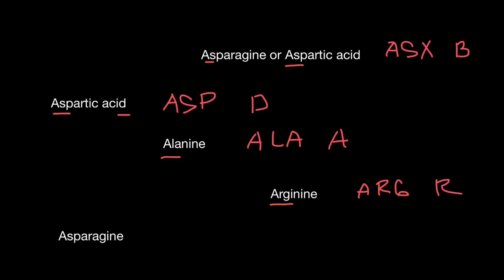For asparagine: ASP is already taken by aspartic acid — two takes over one — so the three letter code is ASN, from AS and the N. The one letter abbreviation is N. So two took over one for the three letter abbreviation, but asparagine won the one letter abbreviation from its own three letter code — unlike aspartic acid, which has three letter abbreviation ASP and the one letter code D, coming from the D in aspartic acid.